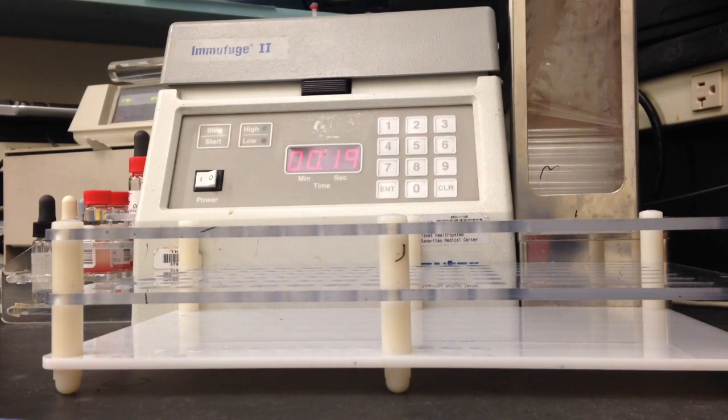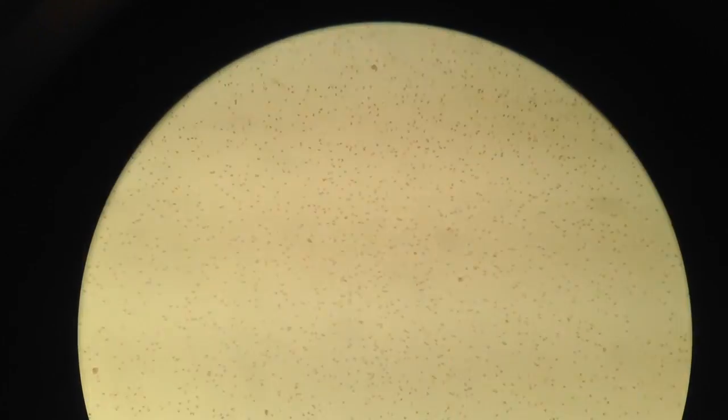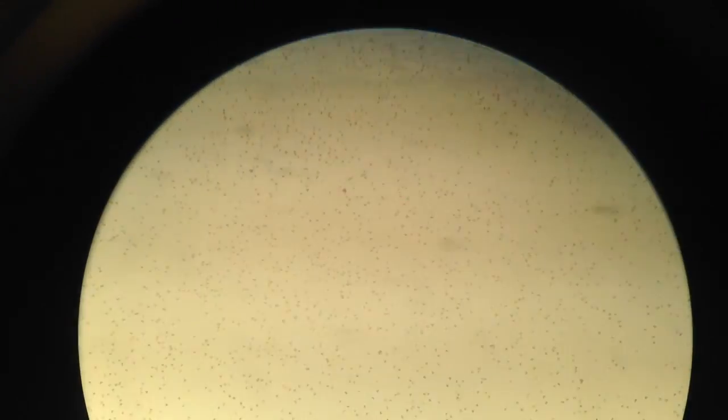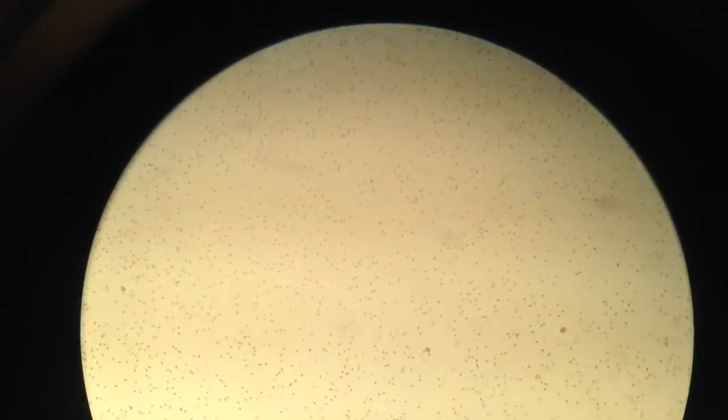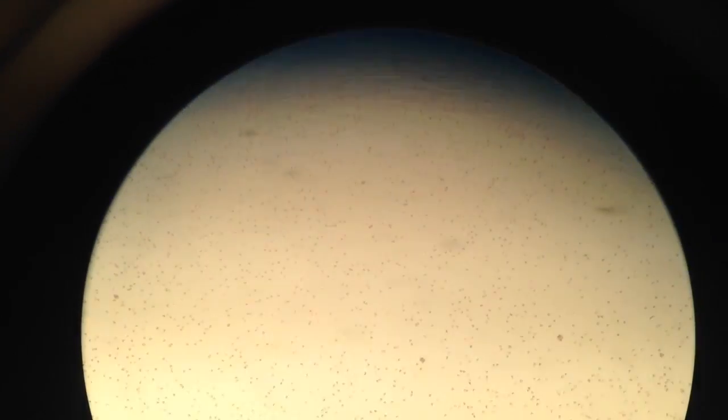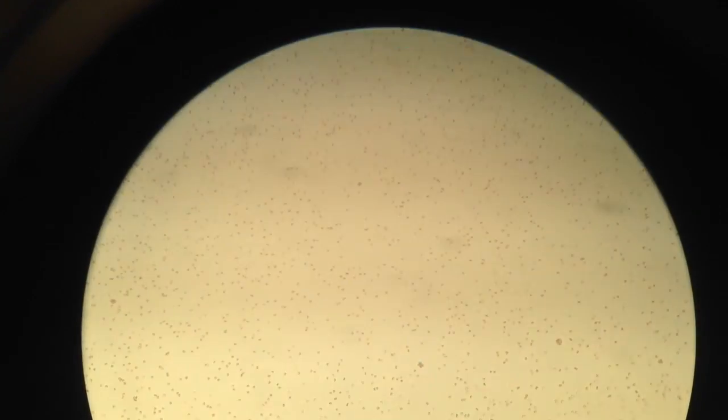Now what you're gonna be looking for here after they've spun is you're gonna want to resuspend them gently and then you're gonna go to a cell viewer which I'm about to show you and you're gonna observe five fields and you're looking for three rosettes. Now I did my best to show you the positive control here so you can see the rosettes and there's quite a few in some of these fields and that's basically all you're looking for. And if you get a positive the next step would be a Kleihauer-Betke test. Thank you for watching.